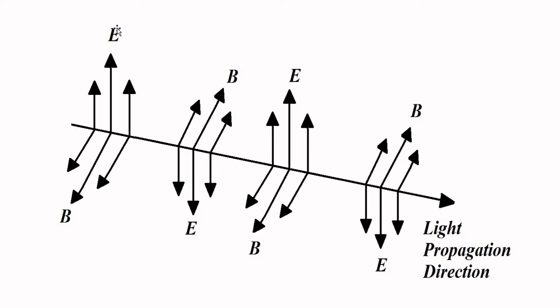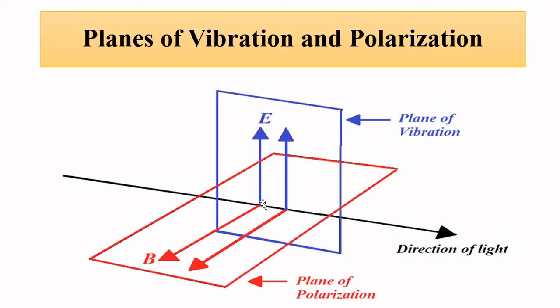We are only concerned with the electric vectors — not the magnetic field vectors. Restricting the electric vectors into one plane is called polarization. The polarization status refers to tilting or rotating the plane of vibration, or the plane of polarization, which is another way to achieve modulation.